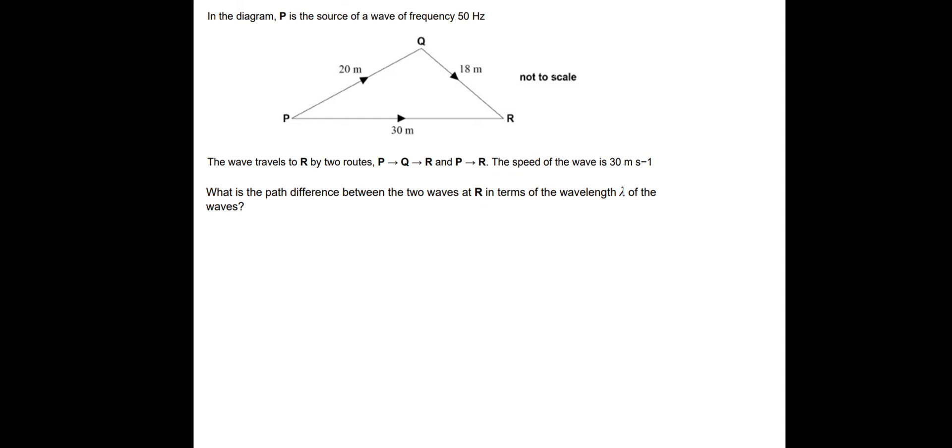So to finish, let's have a go at this question. I'm going to pause and see if you can figure this out. And then I'll take you through the answers. In the diagram, P is the source of a wave of frequency 50 hertz. The wave travels to R by two routes: PQR, this route, and by P to R directly, so this route. The speed of the wave is 30 metres per second. And the question says, what is the path difference between the two waves at R, in terms of the wavelength lambda of the waves? So hopefully from the notes on the previous page, you picked out that we need to look at the total distance travelled. And we also need to figure out the wavelength of the wave. So let's find out the wavelength first. So let's use V equals F lambda. So the wavelength is simply the wave speed divided by the frequency. And the wave speed is 30 divided by 50. So 3 fifths, which is 0.6 metres.